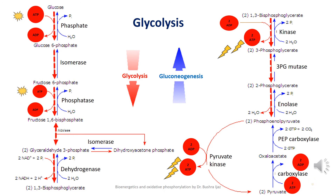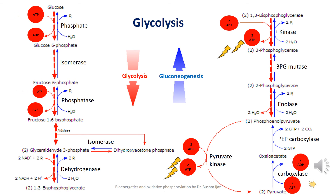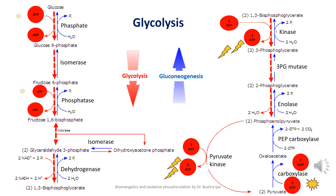Glucose-6-phosphate isomerizes to form fructose-6-phosphate; then a second ATP molecule is consumed as fructose-6-phosphate is converted to fructose-1,6-bisphosphate. This 6-carbon diphosphate molecule splits into two 3-carbon sugars: dihydroxyacetone phosphate and glyceraldehyde-3-phosphate, which are interconvertible via isomerase. Glyceraldehyde-3-phosphate is then acted on by glyceraldehyde-3-phosphate dehydrogenase and converted into 1,3-bisphosphoglycerate. During this reaction, glyceraldehyde-3-phosphate is oxidized while NAD is reduced to NADH and a proton is released.